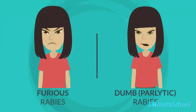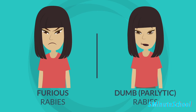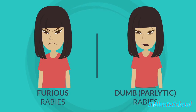There are two main forms of rabies: furious rabies and dumb or paralytic rabies. Furious rabies is characterized by agitation, aggression, and hyperactivity, while dumb or paralytic rabies is characterized by paralysis, weakness, and lack of coordination. However, these forms may overlap and symptoms can vary among individuals.